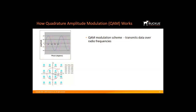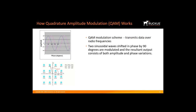Another 11AX enhancement is 1024 Quadrature Amplitude Modulation, or QAM. QAM is a highly developed modulation scheme in which data is transmitted over radio frequencies by varying both the amplitude and phase of the signal. Wi-Fi radios are able to construct a constellation diagram that shows the value associated with different states. The animation shows a 16-QAM signal. For wireless communications, QAM uses two carriers shifted in phase by 90 degrees, and the resultant output consists of both amplitude and phase variations that form the basis for the transmitted binary bits.